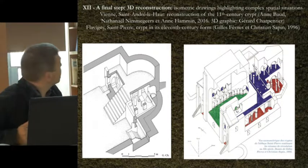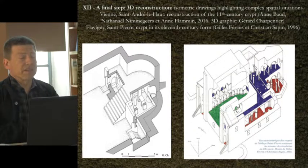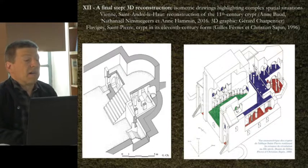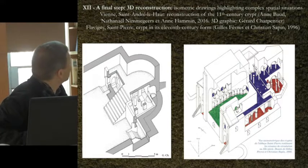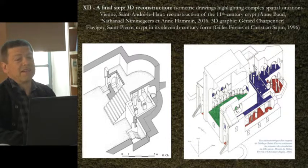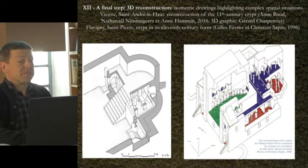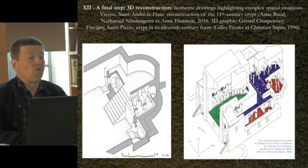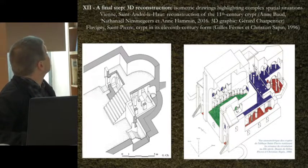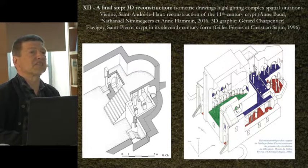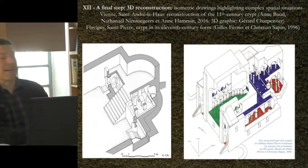The twelfth and final point: after studying a building, 3D is the essential means of communication. There are different ways of producing a 3D document — isometric representations like these very famous ones of Flavigny, and more recently by Flamand and Beau of Saint-André in Vienne. Experience shows that these really excellent 3D representations are very difficult to understand if you are not trained to do so — that's a catastrophe: when I gave my students a document like that for a written exam, it was horrible.